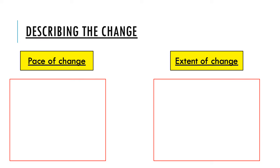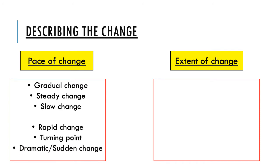So in terms of the language that we could use, if we take the pace of change first, instead of just saying something has changed, we want to get across the speed at which it has changed. So if it's changed quite slowly, we might use phrases like this: it was a gradual change, it was a steady change, it was a slow change. If things have changed really quite quickly, what we might want to use then are things like this: it's a rapid change, a dramatic change, a sudden change, this was a turning point.